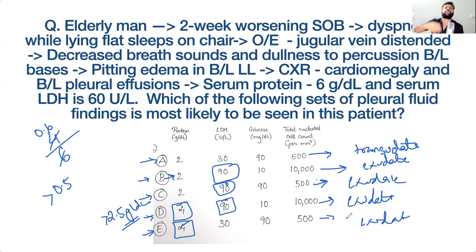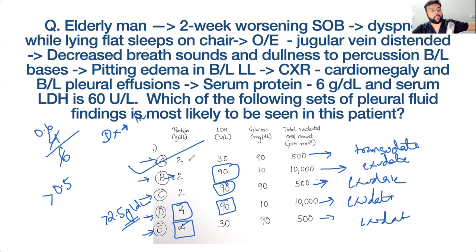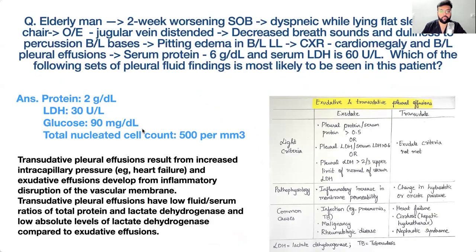What is your diagnosis? Heart failure — he has heart failure with bilateral pleural effusion. That effusion should be transudative. So the correct option is A. Ideally you should not do pleural tapping in this patient because you know it is due to heart failure. The first step is to give diuretics. Tapping is only considered if you are unsure of the etiology. These are Light's criteria.